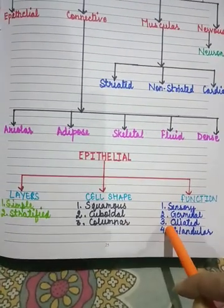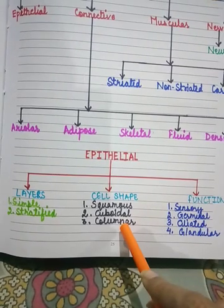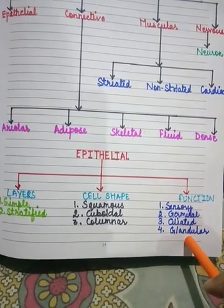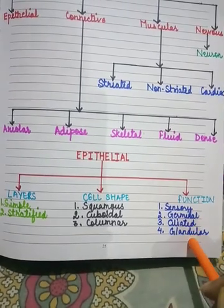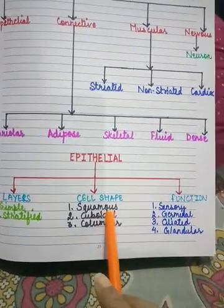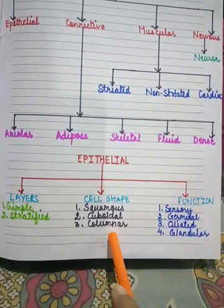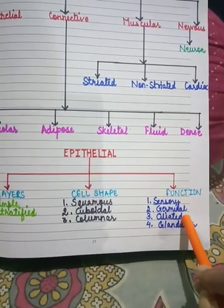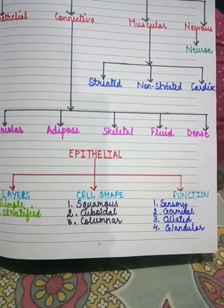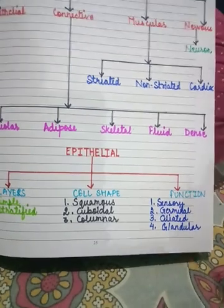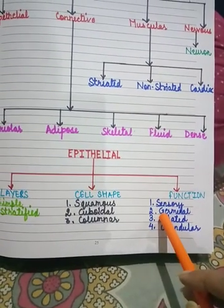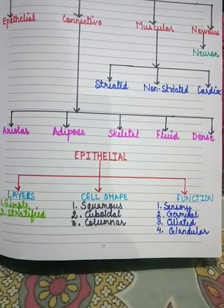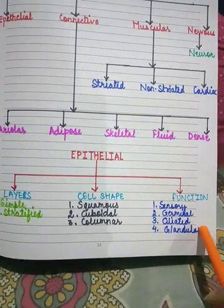Next is columnar epithelium, which is divided into two parts: ciliated columnar epithelium and glandular epithelium. These are cylindrical, brick-like cells found in the inner lining of the stomach and intestine. Ciliated columnar epithelium consists of cilia — hair-like structures — found in the trachea, also known as the windpipe. The cilia keep lashing to move materials entering the region, thereby helping to clear the trachea.